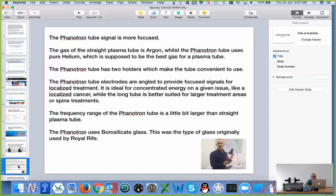As I mentioned before, the straight plasma tube uses predominantly argon, whilst the Phenatron tube uses pure helium. This was the gas which was favored by Royal Rife. He got the best results using this gas, and so we decided to follow in his footsteps.